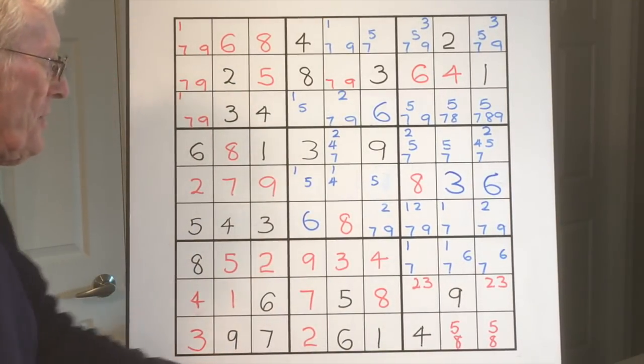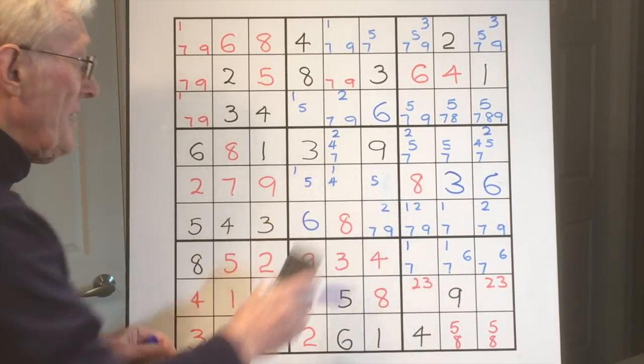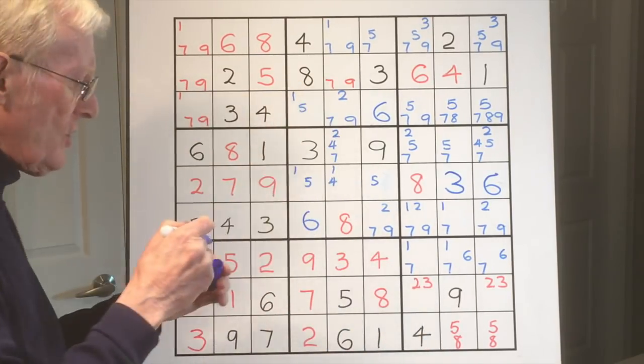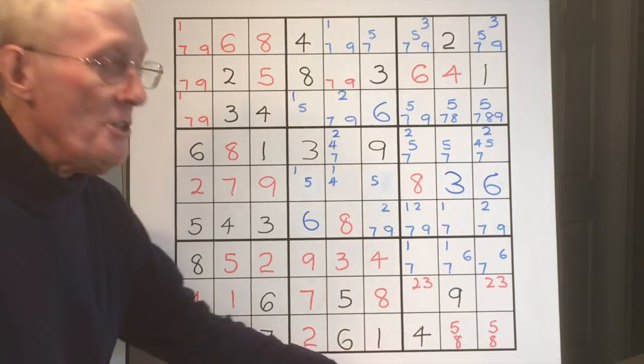But I thought I'd just share that with you. And by the way, did you notice there's a five here? That makes things happen. There's all kinds of things that can happen. Maybe you'd like to finish off the puzzle. So that's it for today's session. Bye for now.